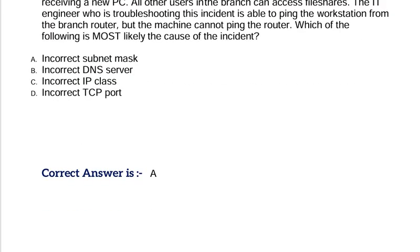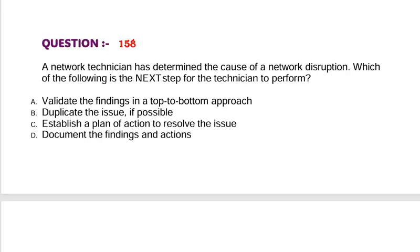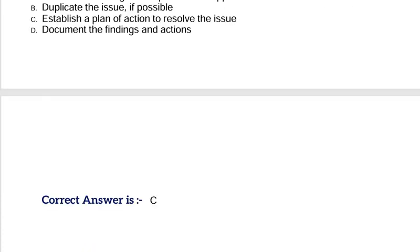Question: A network technician has determined the cause of a network disruption. Which of the following is the next step for the technician to perform? Option A, validate the findings in a top-to-bottom approach. Option B, duplicate the issue if possible. Option C, establish a plan of action to resolve the issue. Option D, document the findings and actions. Correct answer is Option C.